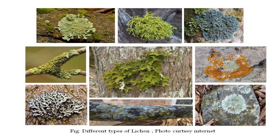Fruticose lichens are also called frutex or shrubs. Their thallus is very well defined and shrub-like, with cylindrical branches. They are very beautiful. Some examples of fruticose lichens are Cladonia, Usnea, and Letharia.